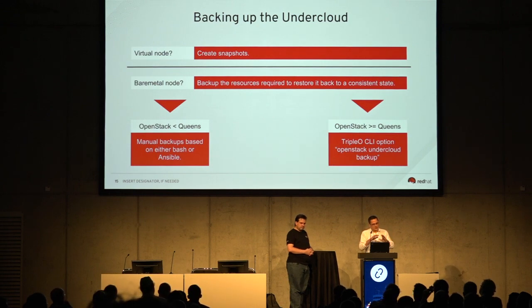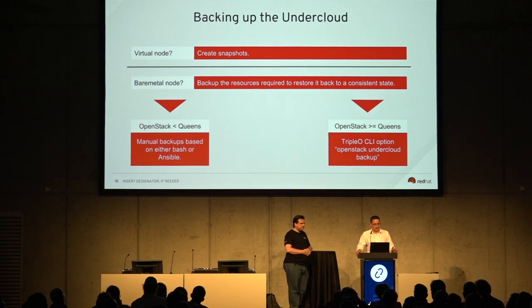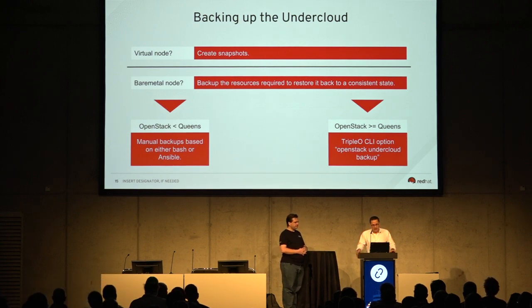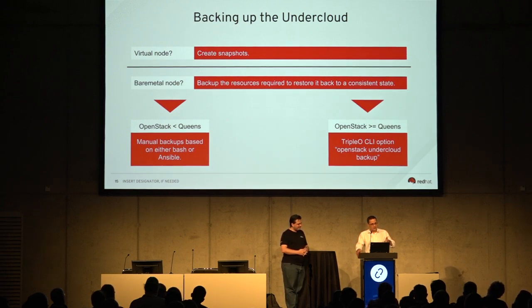For the specific use case of the undercloud: if you have your undercloud in a virtual machine, it's very easy — just create a snapshot and restore it. If you have a bare metal node, you may not be able to create a snapshot. We're taking the worst-case scenario: imagine someone went into your data center, the undercloud node is gone, and you need to reinstall the undercloud from scratch using the data from your backup.